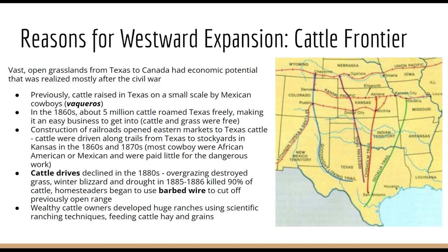Previously, before the Civil War, cattle were raised in Texas pretty much on a small scale, mostly by Mexican cowboys called vaqueros. After the Civil War in the late 1860s, there was an enormous amount of cattle roaming Texas freely — about 5 million head of cattle. It made it a really easy business to get into because the cattle and grass were free, with very few barriers to entry, at least initially.